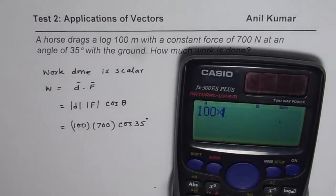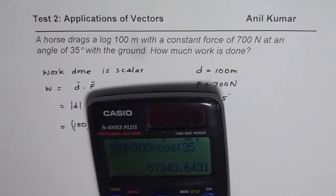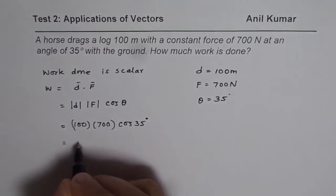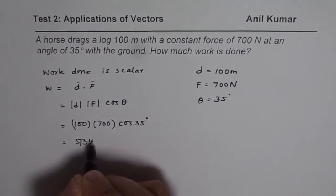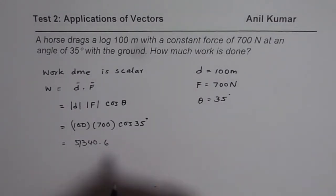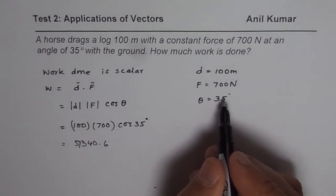Let us use the calculator to find the answer. So 100 times 700 times cos of 35 degrees, that gives us 57340, 57340.6. So that is the work done in Newton meters.